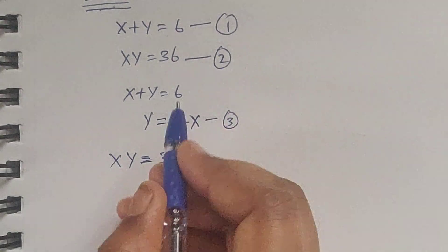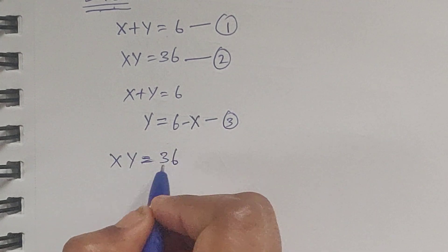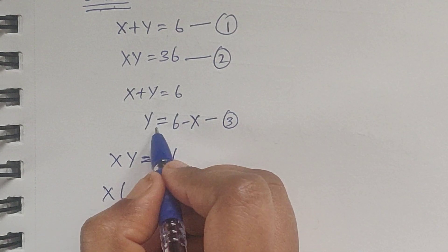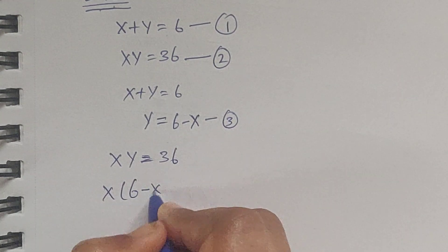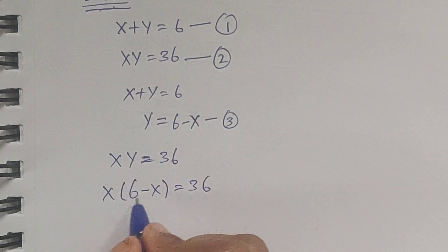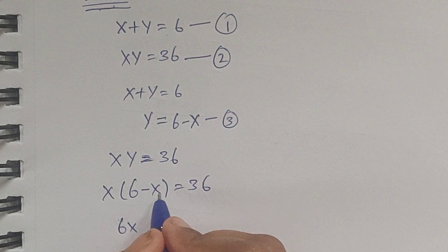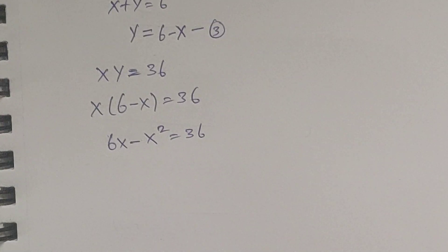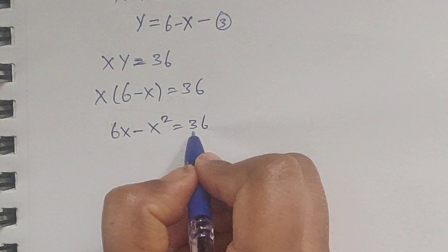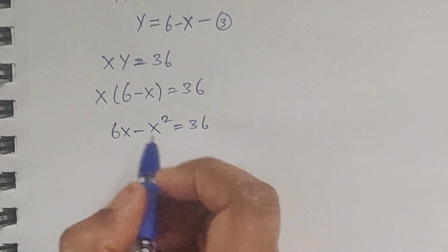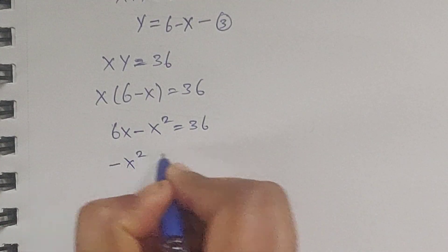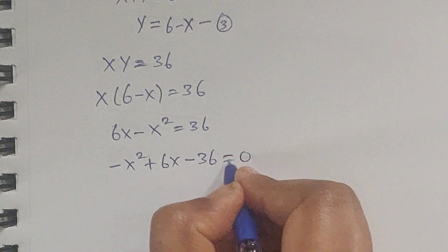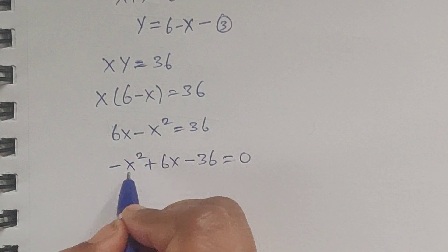Substitute equation 3 into equation 2. So x times (6 minus x) equals 36. Expanding: x times 6 is 6x, and x times x is minus x squared, equals 36. Now move 36 to the left side — it will become negative.